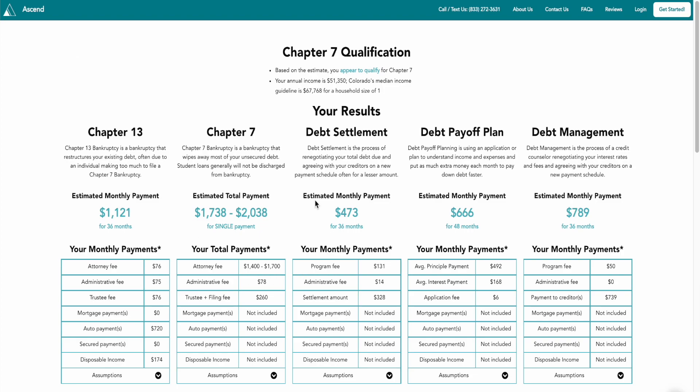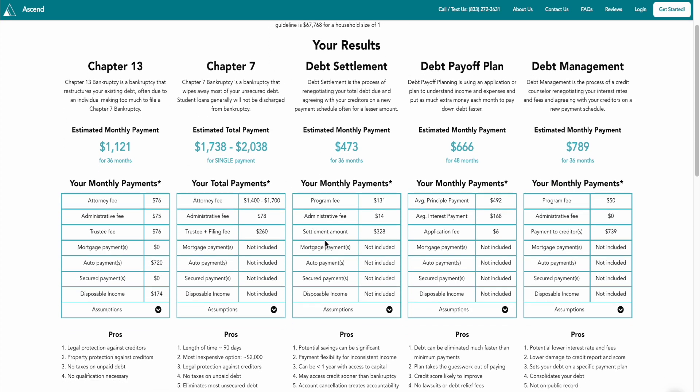The last con that we're going to talk about is debt settlement may be more expensive than Chapter 7 bankruptcy. Now, it can be a lot cheaper than Chapter 13 bankruptcy, and our debt relief calculator actually goes into the different options and helps you understand the all-in costs for each of these things. But it is important to understand that debt relief may be more expensive than Chapter 7 bankruptcy.